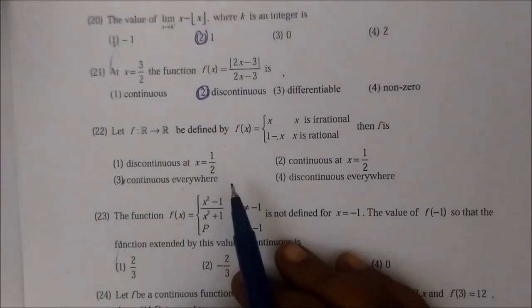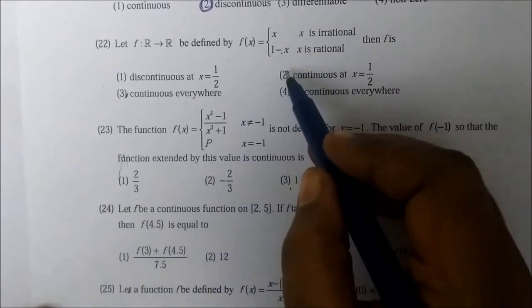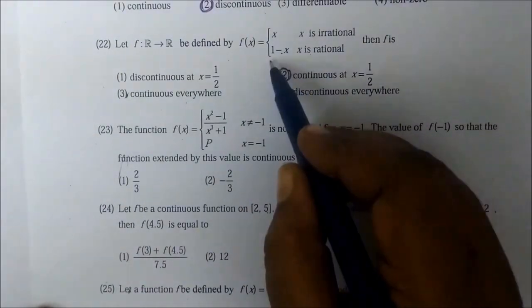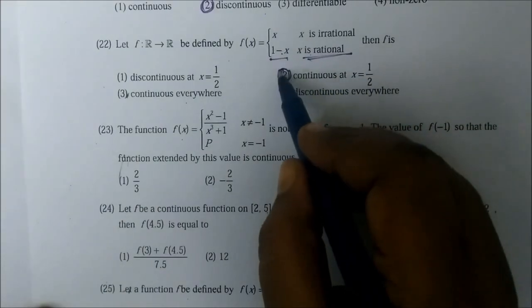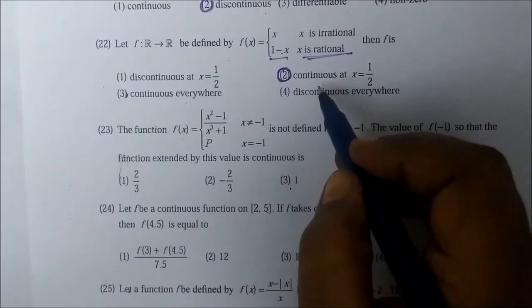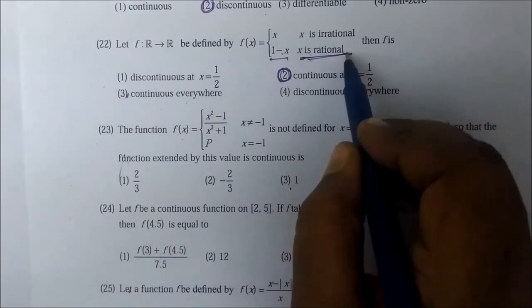Question number 22. This is the answer. But there is a particular point. This is the option. From this particular point to the right side. Don't forget that. Now you have to choose this. This is a rational number.